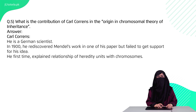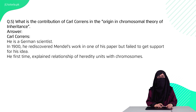Question 5 is: what is the contribution of Carl's in the origin of the chromosomal theory of inheritance? Carl's was a German scientist and he was the first scientist who linked genes to chromosomes.